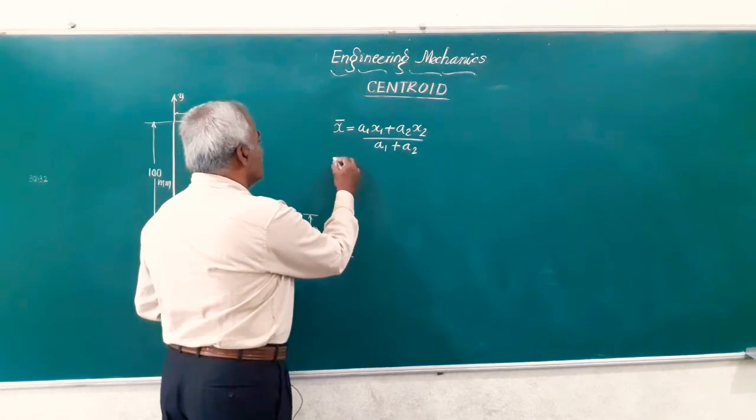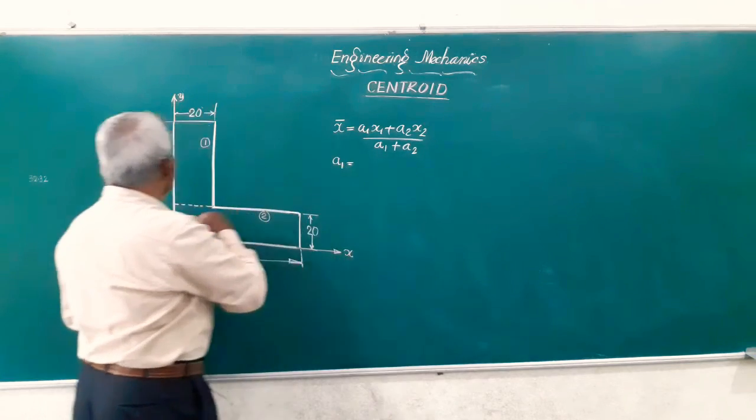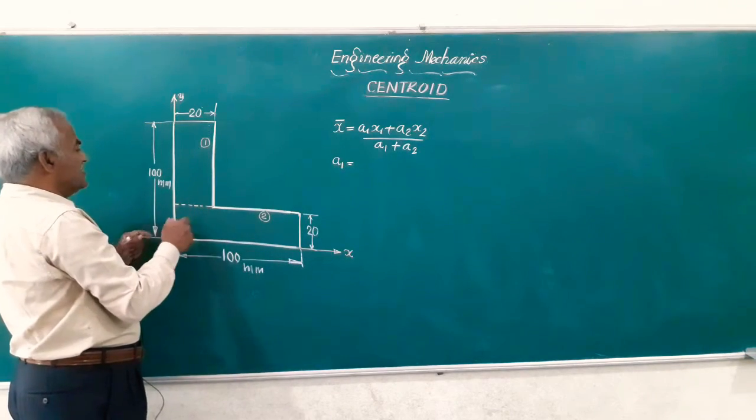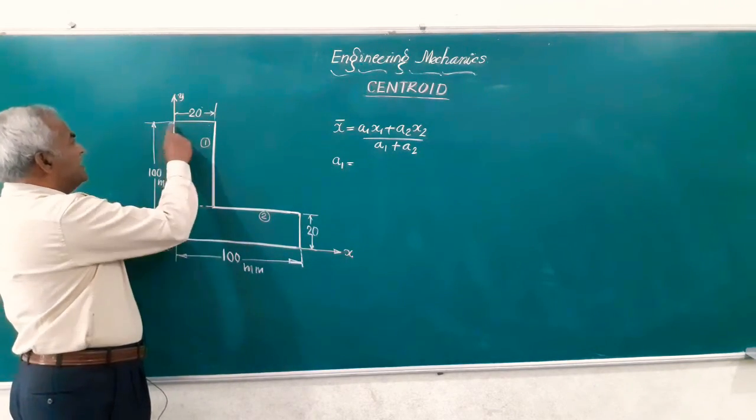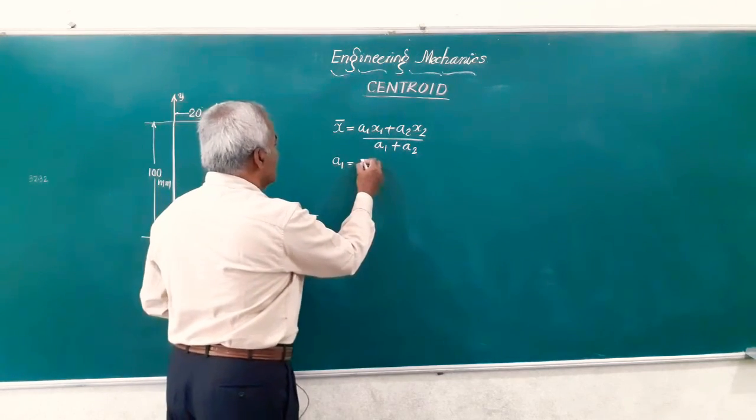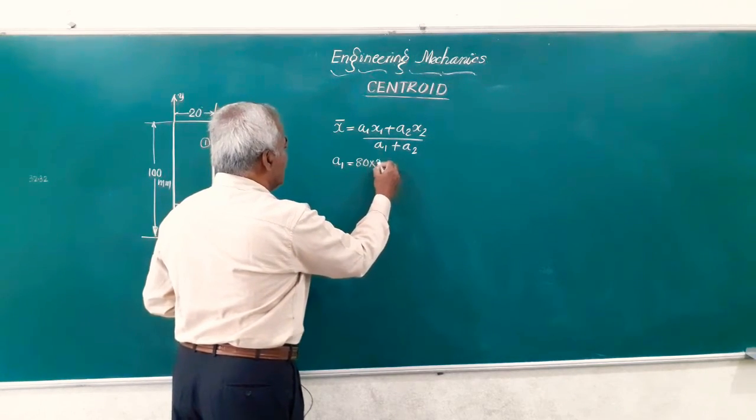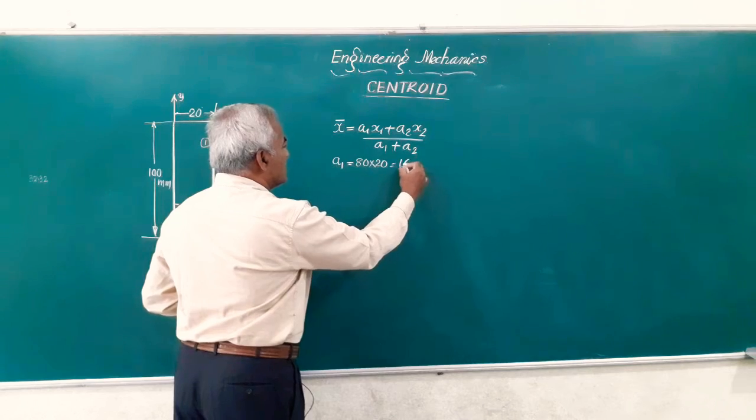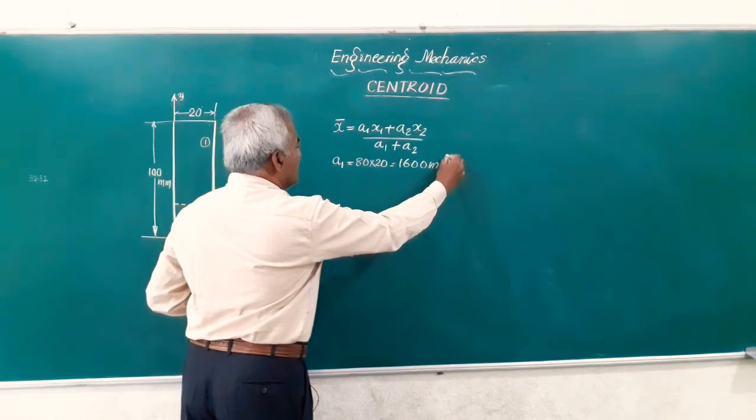Friends, here a1 is the area of this rectangle which is nothing but this is 80 and 20, so we can say this has got an area of 80 into 20, that is 1600 millimeter square because all the dimensions are given in millimeter.